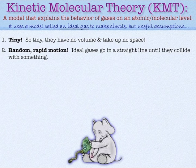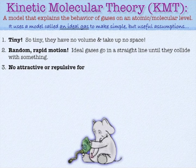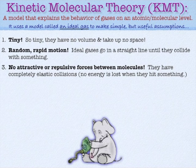An ideal gas would be tiny and take up no space. It would have rapid random motion — meaning particles run in a straight line until they hit something, bounce off, and run off in a new direction. This happens very quickly in the real world. It's akin to putting on a blindfold and starting to run — you'd hit something and immediately start running in a different direction, meaning all your collisions would be elastic. No matter how fast you're going, when you hit something you'd immediately be going that fast again in a new direction.